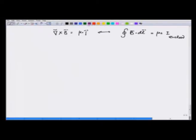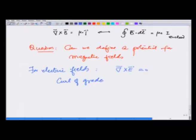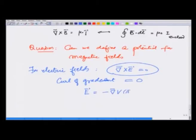We had raised the question: can we define a potential for magnetic fields? In this lecture we address this question. Recall that for electric fields we had curl of E equal to 0, and we used this to define a potential because curl of gradient is always equal to 0. One could write that E is equal to minus gradient of V(r) because this curl will always give you 0.